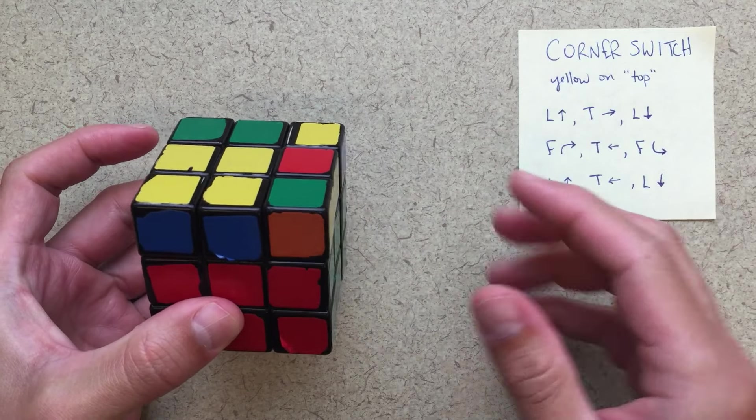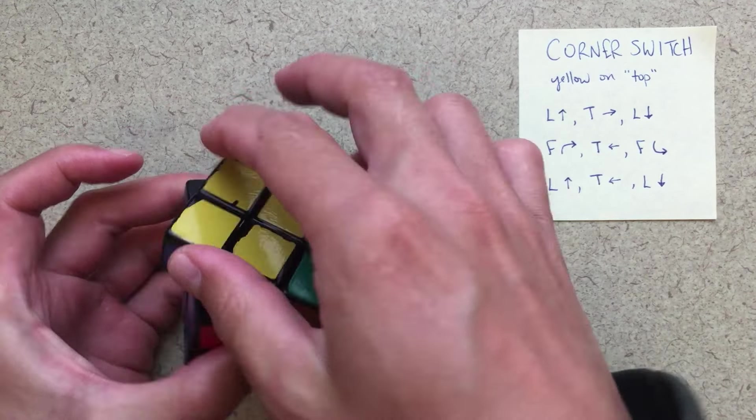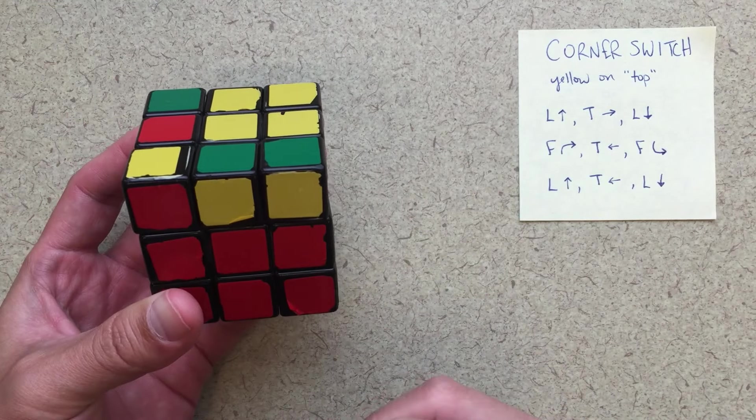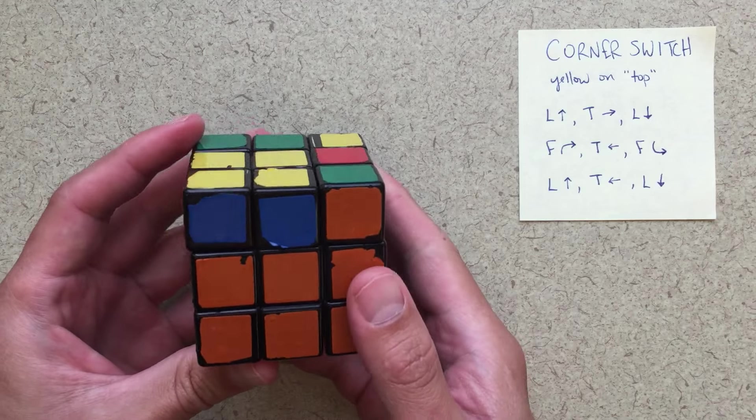And once we've finished that algorithm, then those pieces that started over here, they actually end up in the back. So we can just turn the cube around. And in fact, those are now switched. They're in the correct spots. That's great.